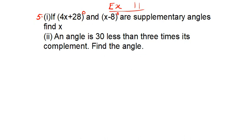Question number 5 says to us that if 4x plus 28 degrees and x minus 8 degrees are supplementary angles, find x. In the first part we have that 2 supplementary angles are given to us. First is 4x plus 28 degrees, and second is x minus 8 degrees. These 2 supplementary angles are given to us and we have to find x.